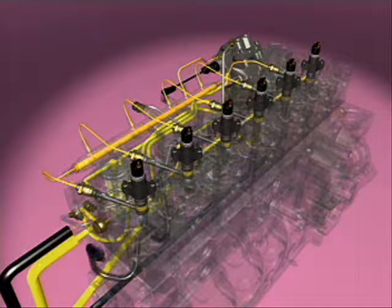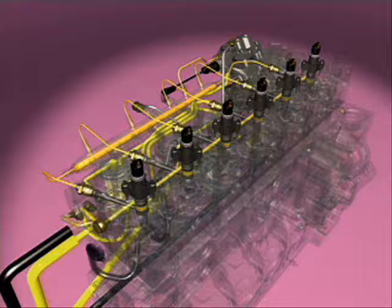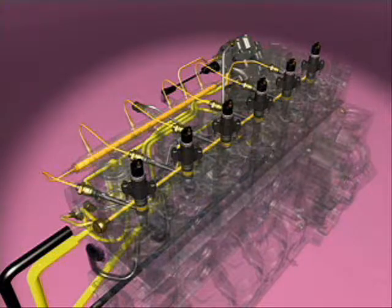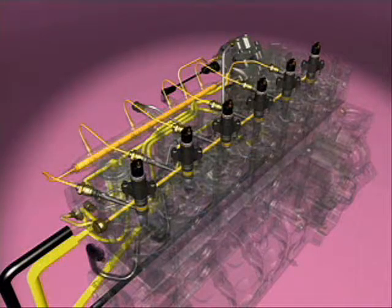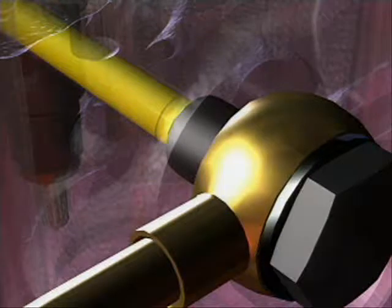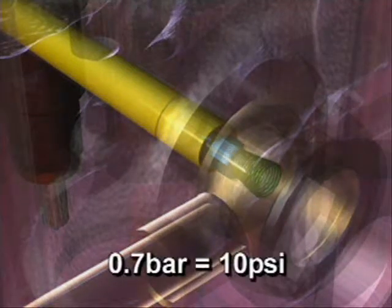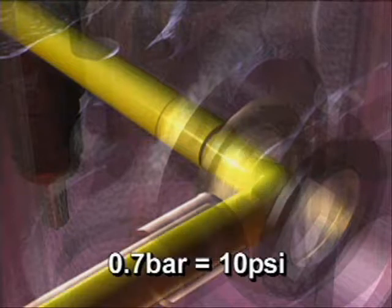Fuel flowing out the fuel return from the injector flows back to the fuel drain block. The drain line check valve is installed in the fitting in the cylinder head. This check valve maintains 0.7 bar back pressure on the injectors.